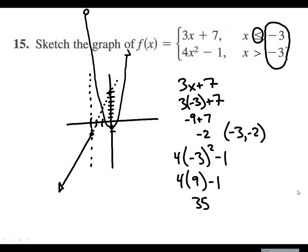Very steep parabola. All right? So we have a straight line to the left and a parabola, very steep parabola, to the right of the line x equals negative 3.